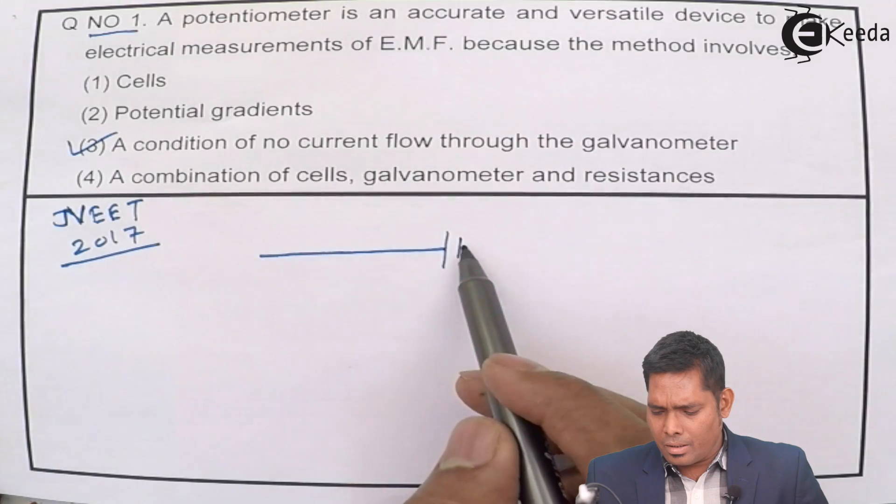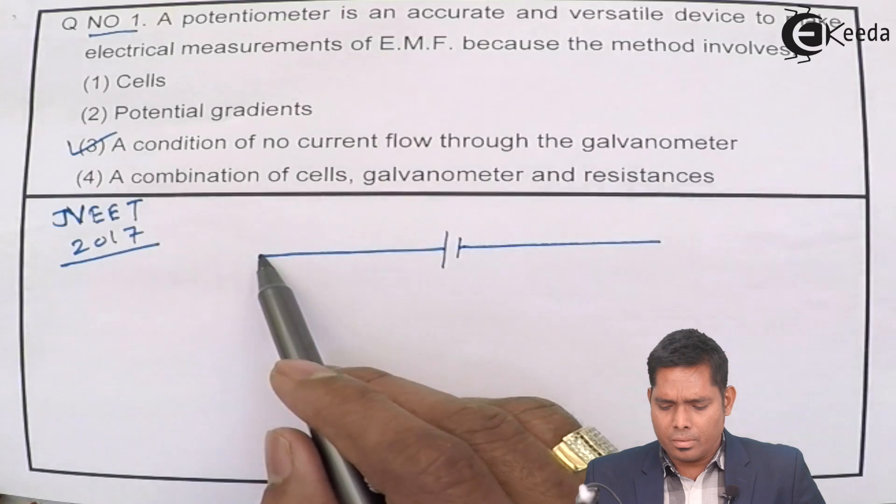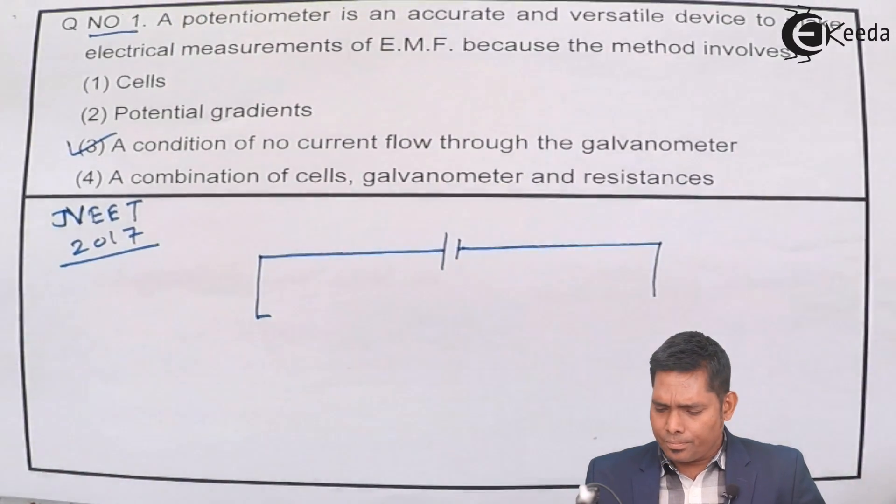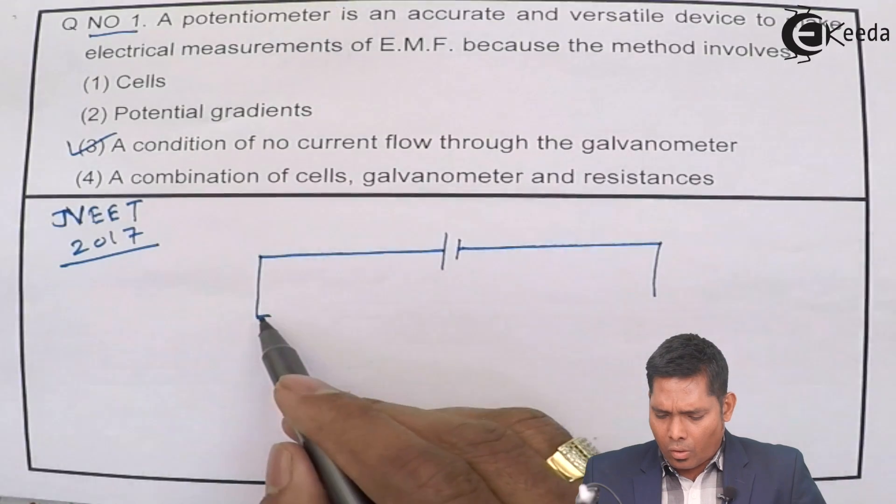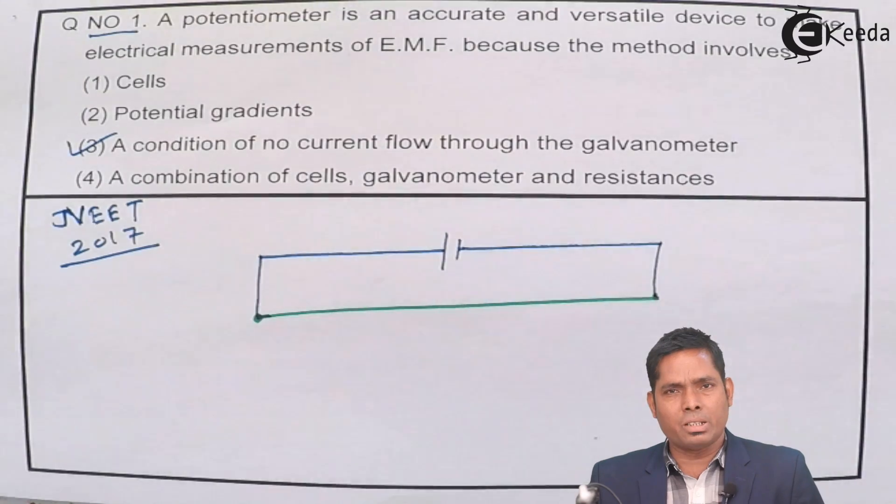Potentiometer is a simple device with one cell and one wire. This wire varies generally from 5 to 10 meters.